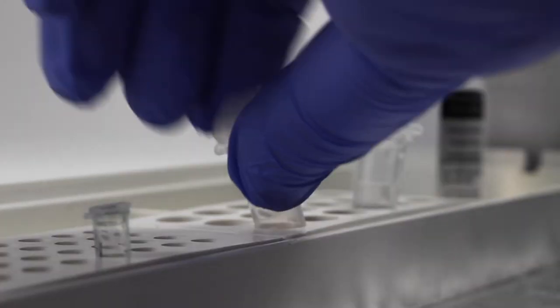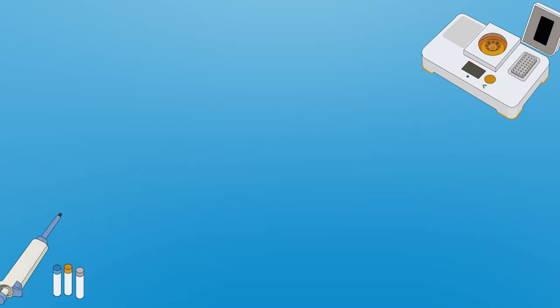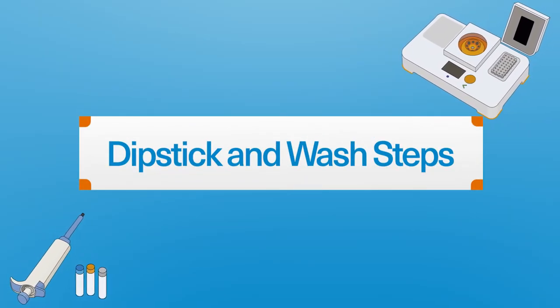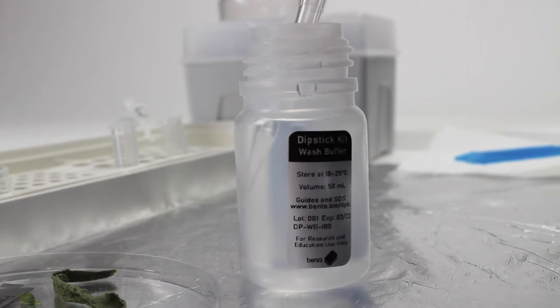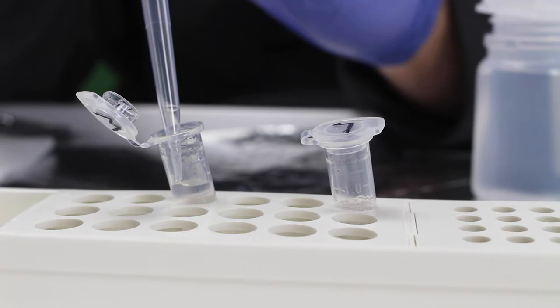Finally, top up with more extraction buffer to a total of 500 microliters and close the lid. Next, aliquot one milliliter of the wash buffer into the second 1.5 mm tube and close the lid.